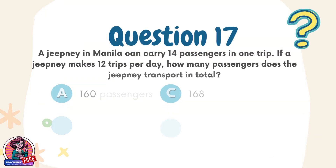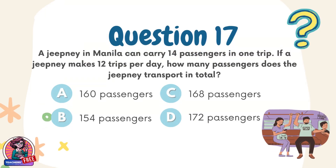Question 17. A jeepney in Manila can carry 14 passengers in one trip. If a jeepney makes 12 trips per day, how many passengers does the jeepney transport in total? Choices: A. 160 passengers, B. 154 passengers, C. 168 passengers, D. 172 passengers.